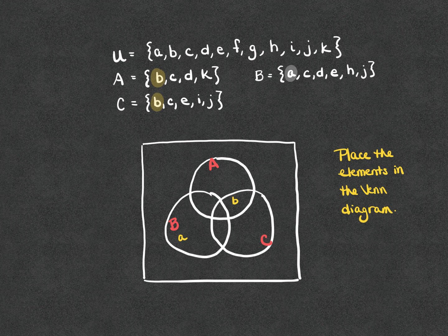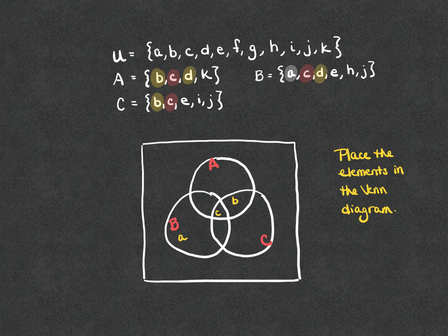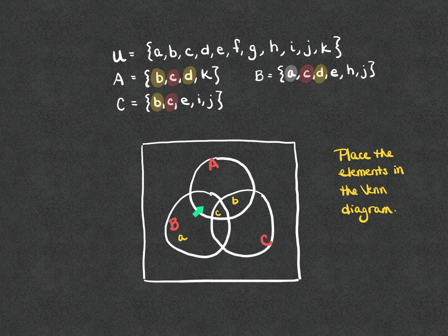When it comes to element C, I notice that C is in all three subsets, so C belongs right there in the middle — the overlap of all three. Moving on to element D, I notice that D is in subset A and subset B, but not in subset C. So I place element D in the region where A and B overlap but not C. Looking at element E, it is in subset B and C only, so element E belongs in the B and C overlap.